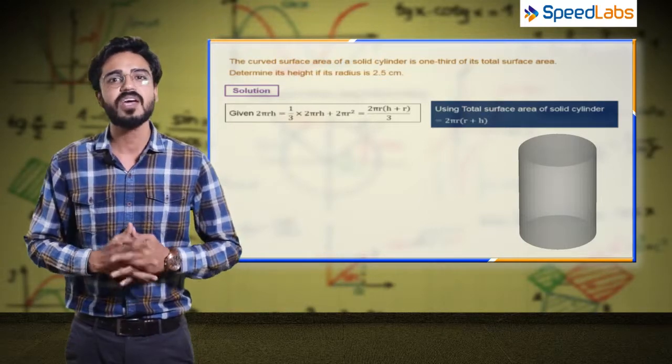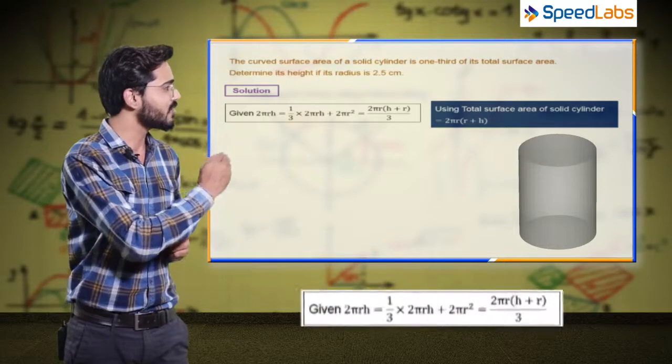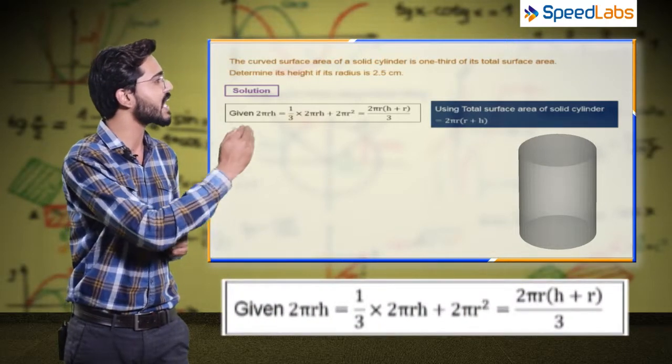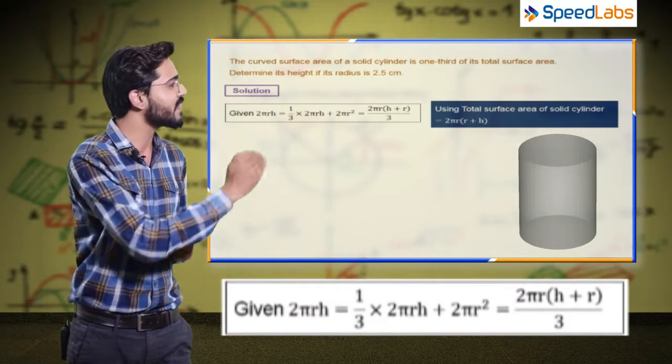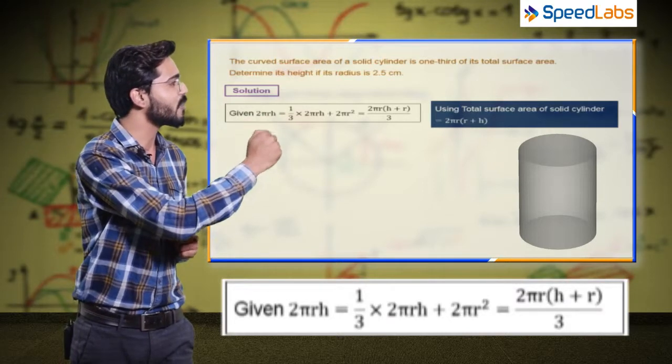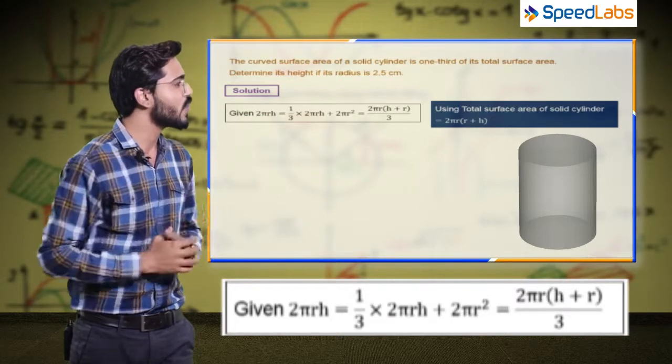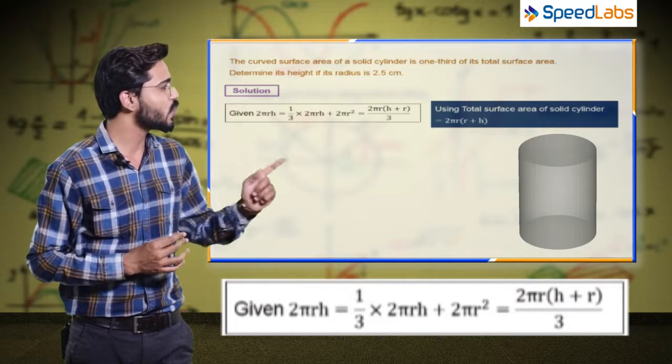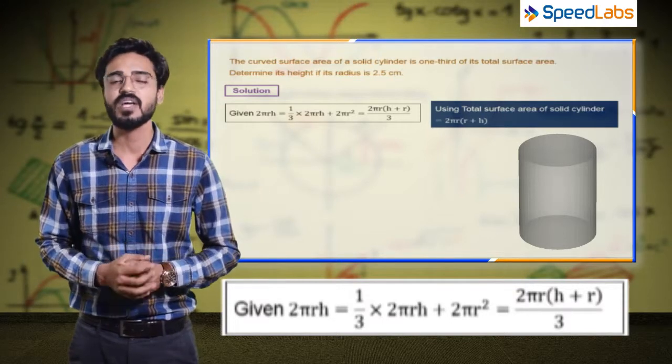Which is 2πrh equals one-third of its total surface area. So that would be 1/3 times (2πrh + 2πr²). Now here the radius is given to you as 2.5 centimeters.